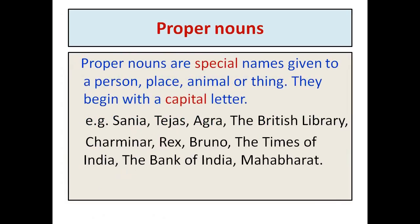What are Proper Nouns? Proper Nouns are special names given to a person, place, animal or thing. They begin with a capital letter. Some examples of Proper Nouns are Sanya, Tejas, Agra, The British Library, Charminar, Rex, Bruno, The Times of India, The Bank of India, Mahabharat.